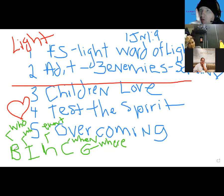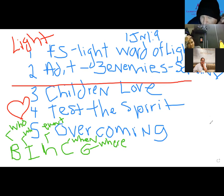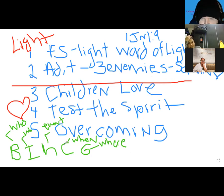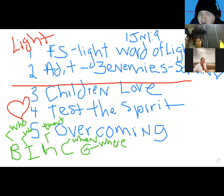If you had to pick only one general material for the whole book of First John, based on everything we've talked about, which one would you pick? You need to pick one of these: biographical, ideological, historical, chronological, or geographical — to summarize what the whole book is about.